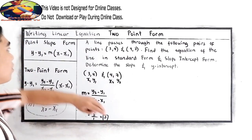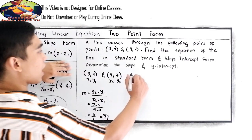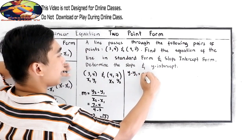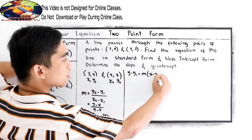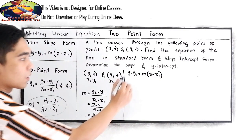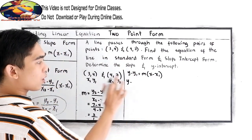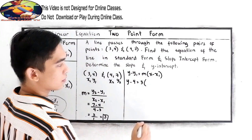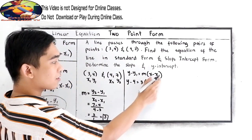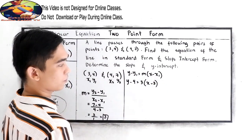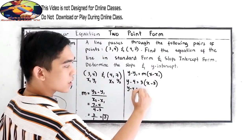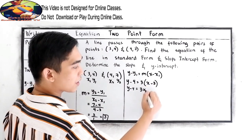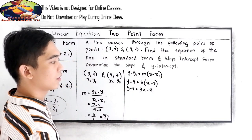Now, after getting the slope, we can go to the point slope form. So, copy: y minus y sub 1 is equal to m times x minus x sub 1. So, y minus y sub 1, that is 4, is equal to m is 3, and x minus x sub 1 is 3. So, y minus 4 is equal to, distribute 3 times x minus 3: 3x, 3 times negative 3, negative 9.